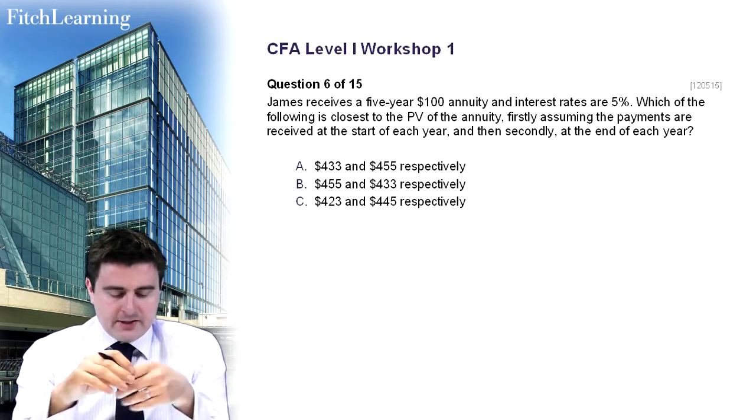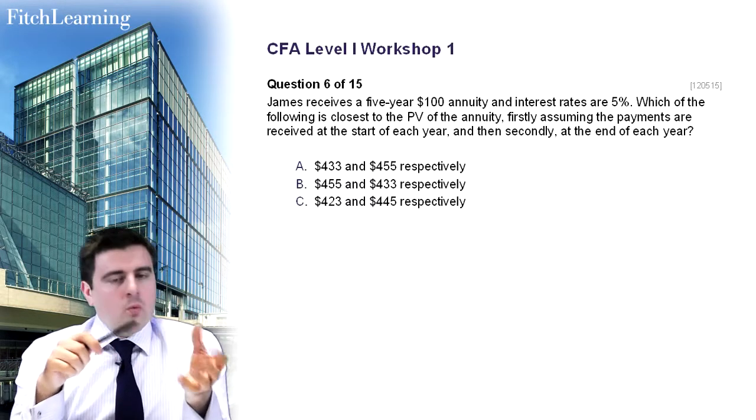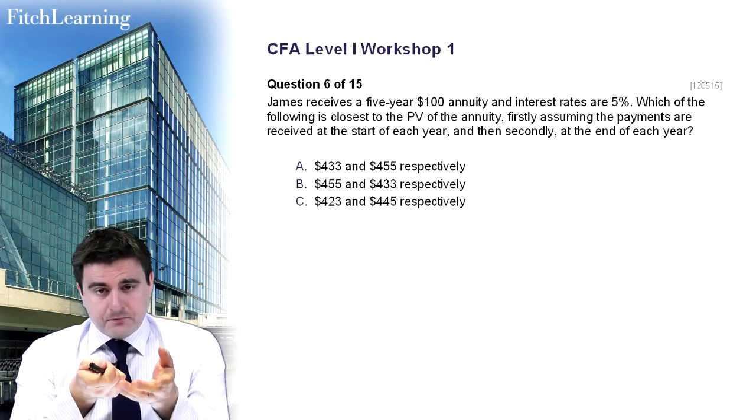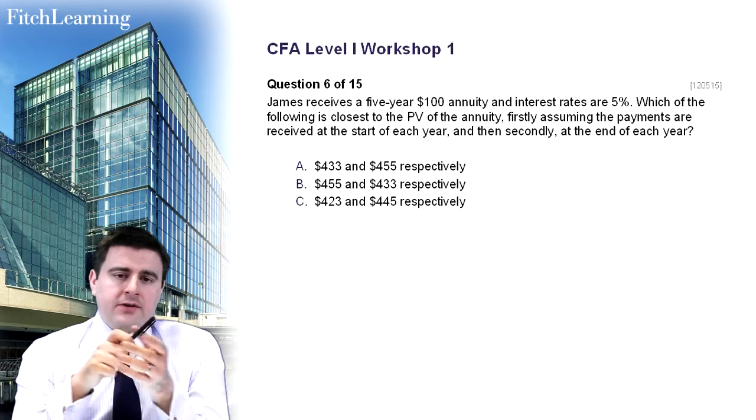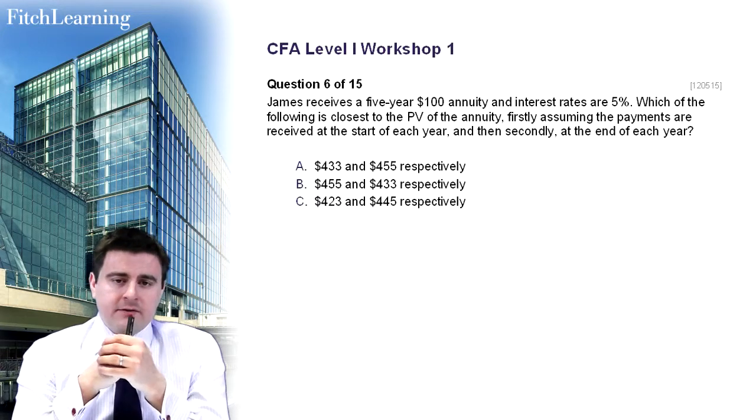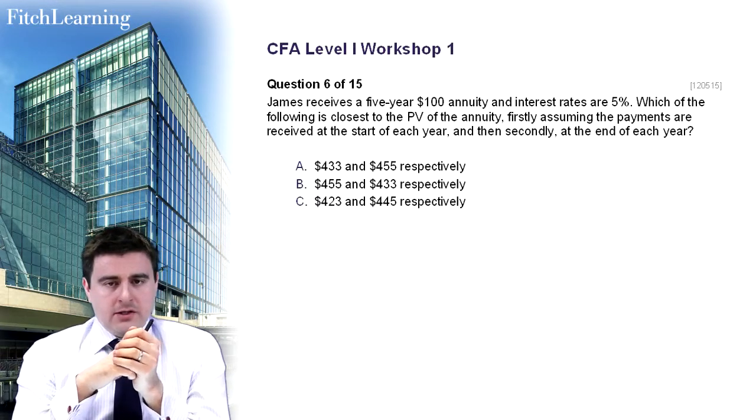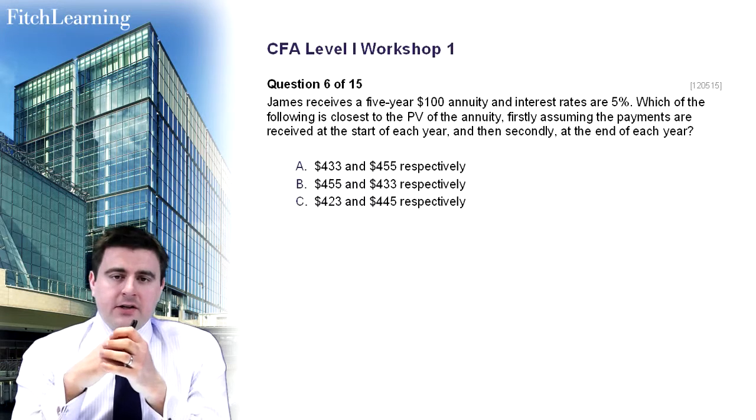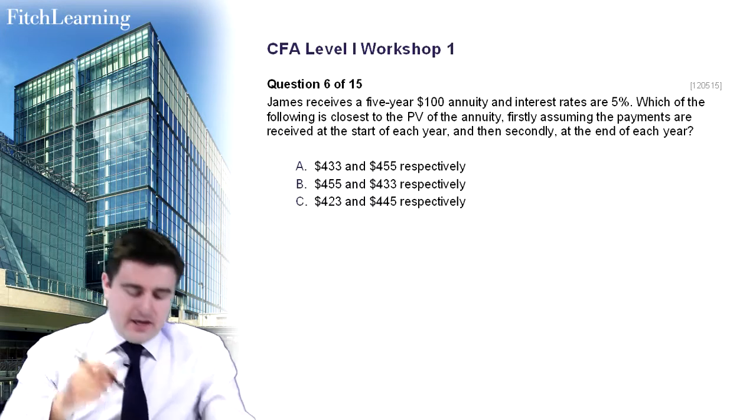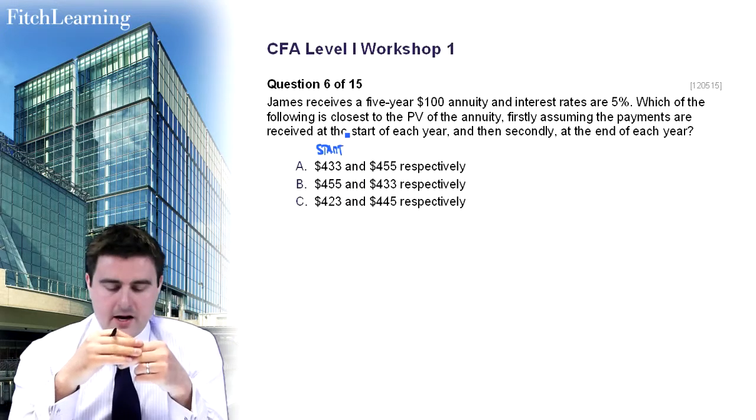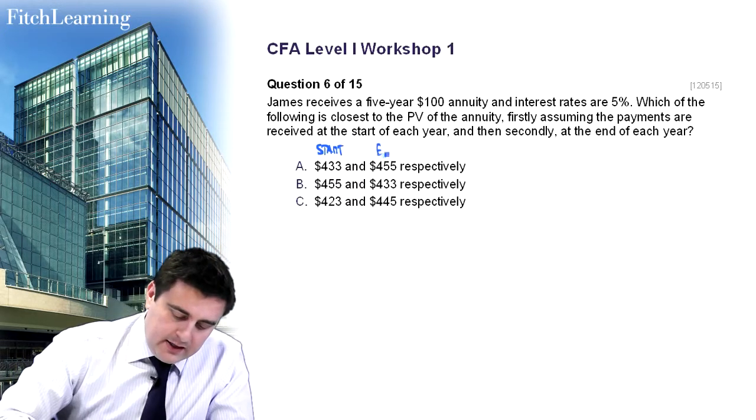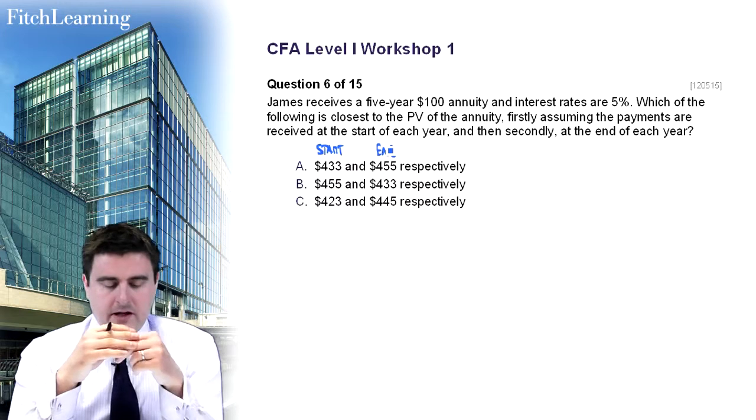So what we've got here is Jane receives a five-year, $100 annuity, interest rates of 5%, which of the following is closest to the PV? That's the present value of the annuity. And it says there, firstly, assuming that the payments are received at the start, and then secondly, at the end of each year.